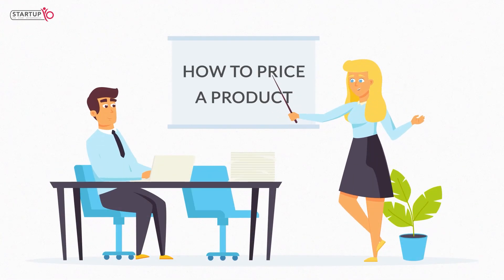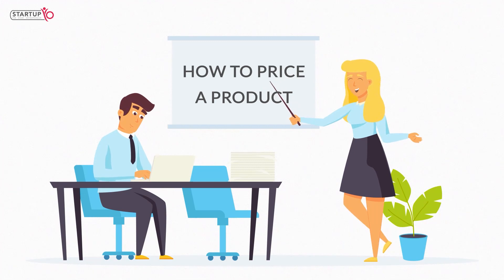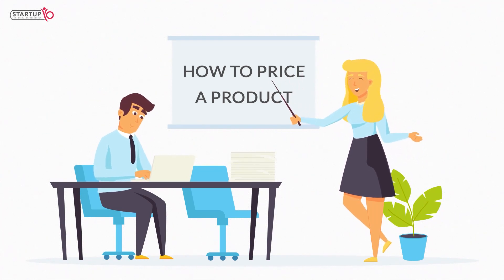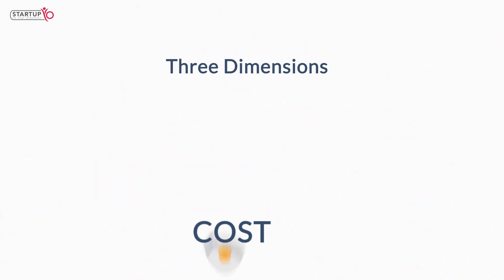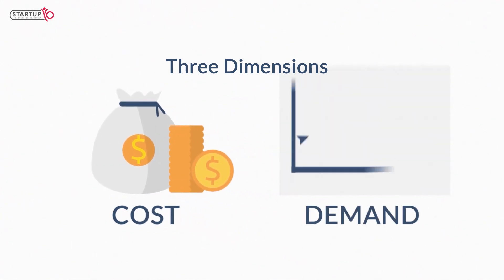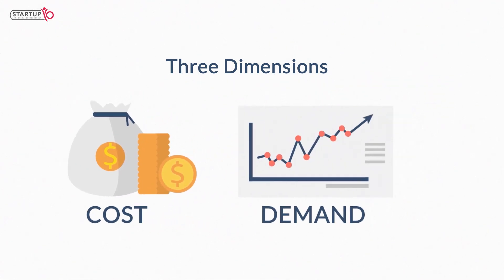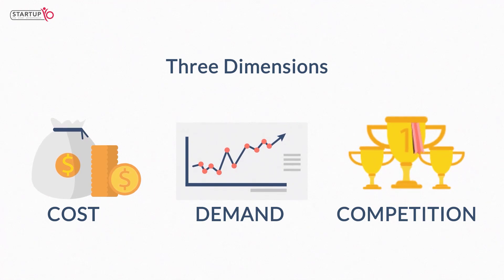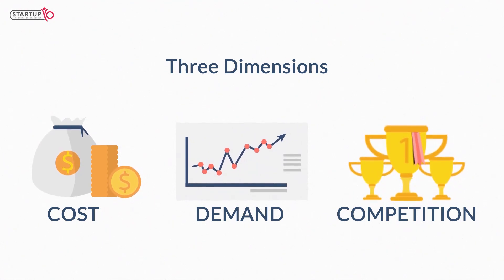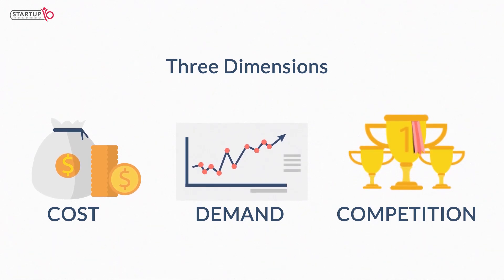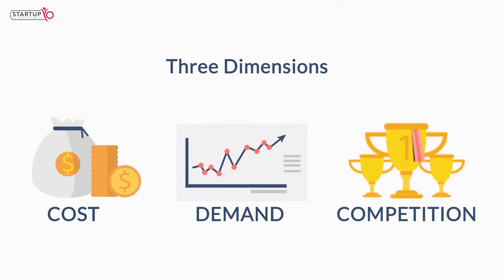How to price a product: an organization has various options for selecting a pricing method. Prices are based on three dimensions — cost, demand, and competition. Let's look at the three factors that go into most retail, manufacturing, artisan, and e-commerce product pricing strategies.